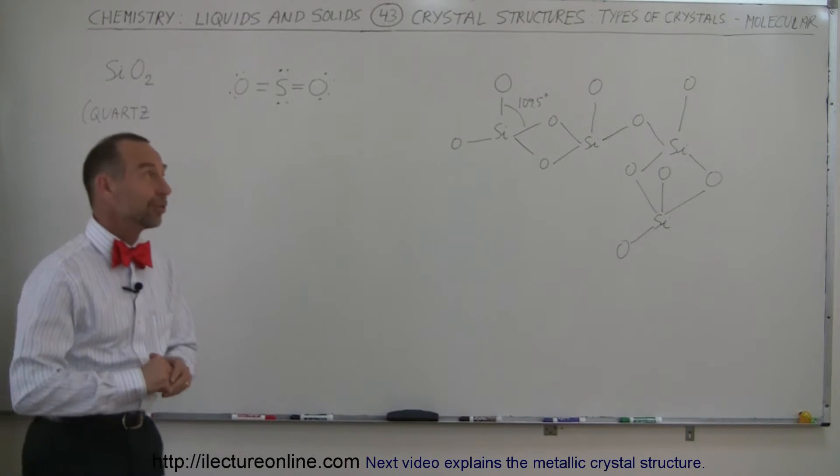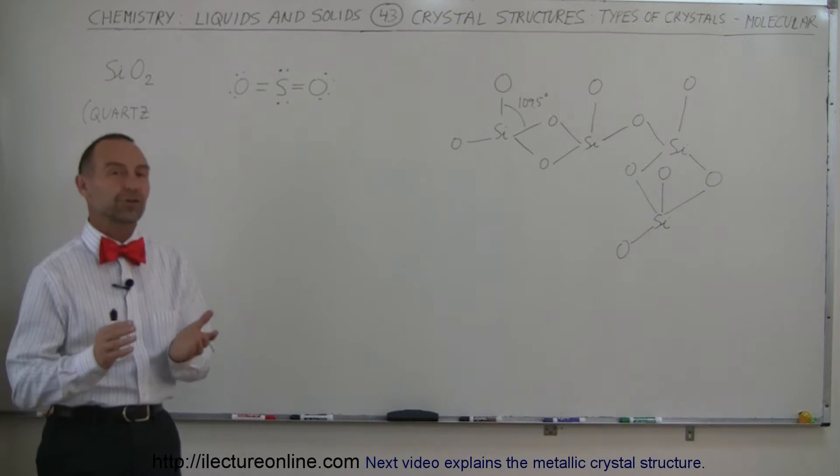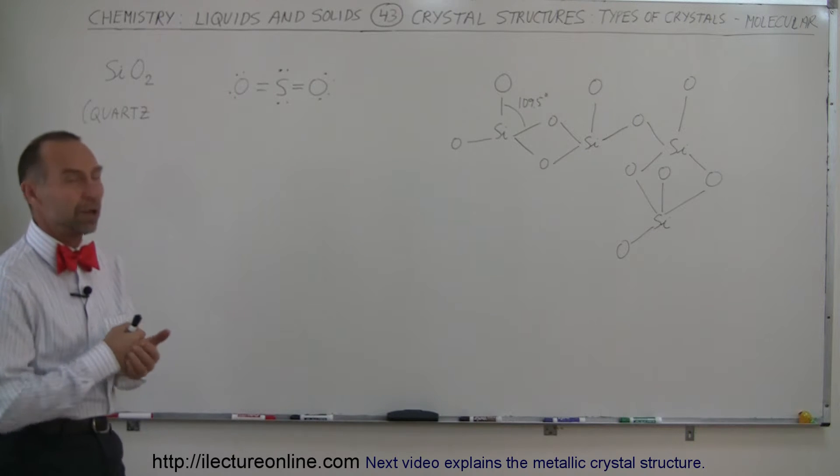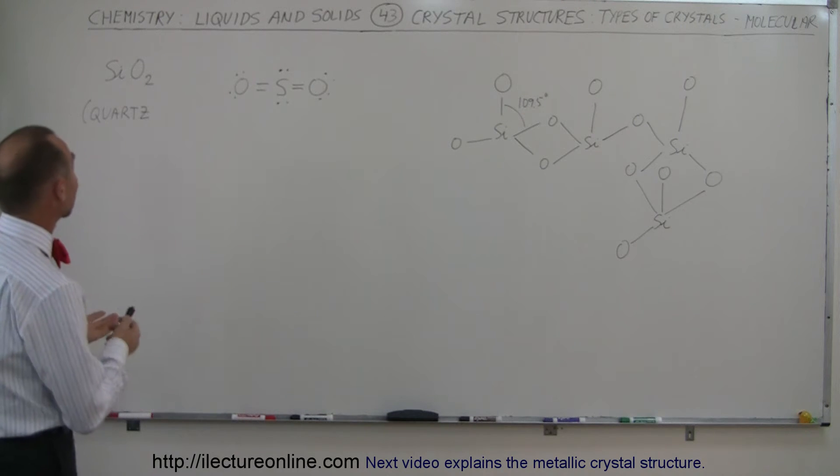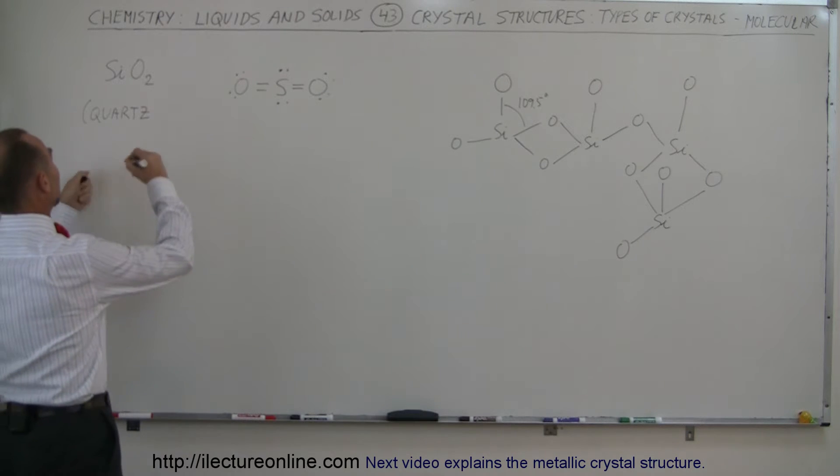Welcome to ElectronLine, and here's the next type of crystal structure. It's made out of molecules, so we call it molecular crystal structure, and a really good example of that is silicon dioxide, also known as quartz.